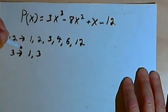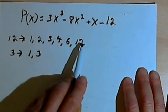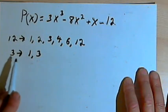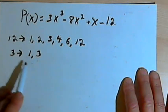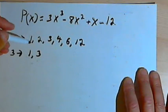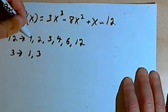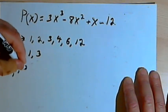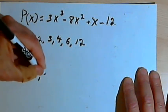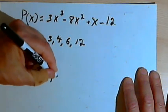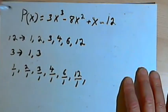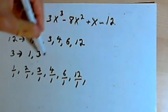Now what I want to do is make a series of fractions. The numerators of the fractions will be taken from the factors of the constant, and the denominators will be taken from the factors of the leading coefficient. I take each of these factors of 12 and put them over 1: 1/1, 2/1, 3/1, 4/1, 6/1, and 12/1.